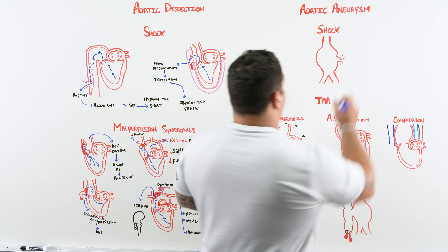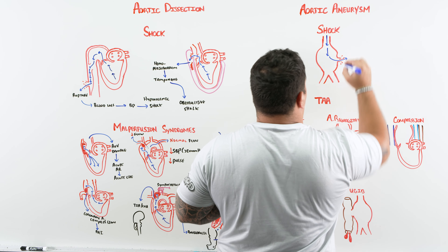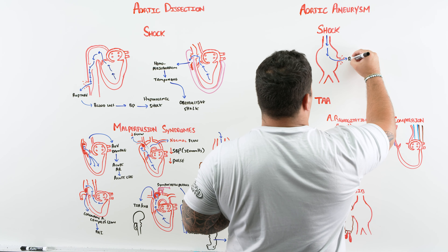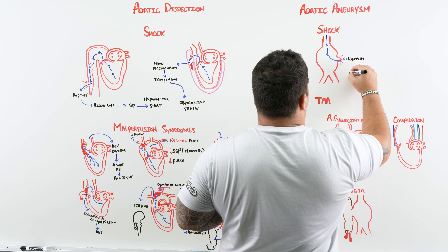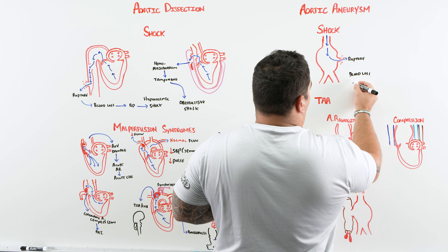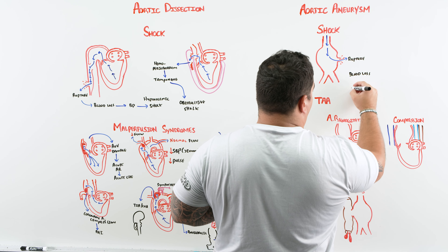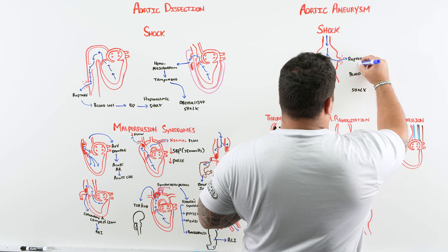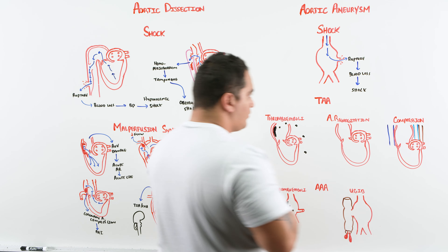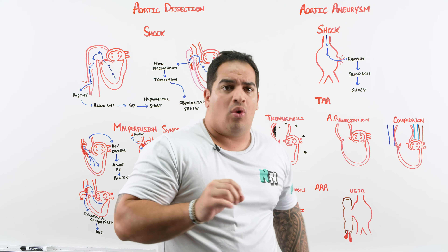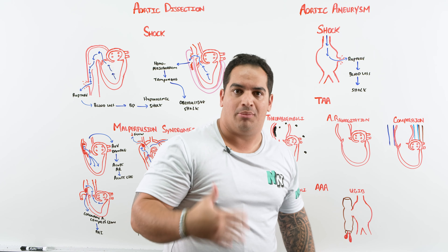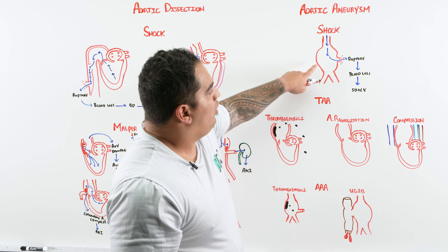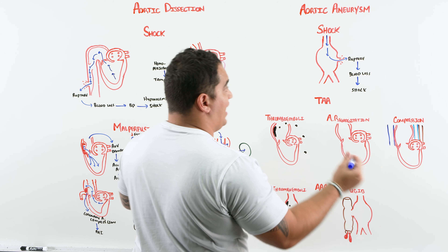For aortic aneurysms — the vessel is already dilated, the wall is thin and weak, pressure shoots up, and these can literally pop. When a rupture occurs, there is massive blood loss. These patients will exsanguinate, drop their blood pressure, and develop shock — hypovolemic, or specifically hemorrhagic shock.